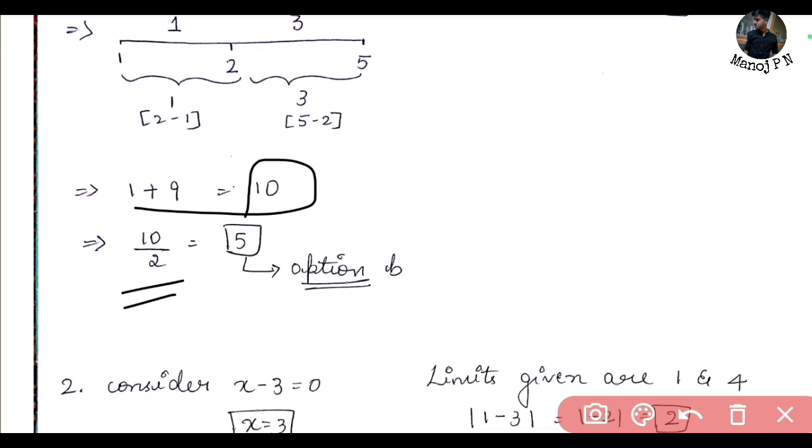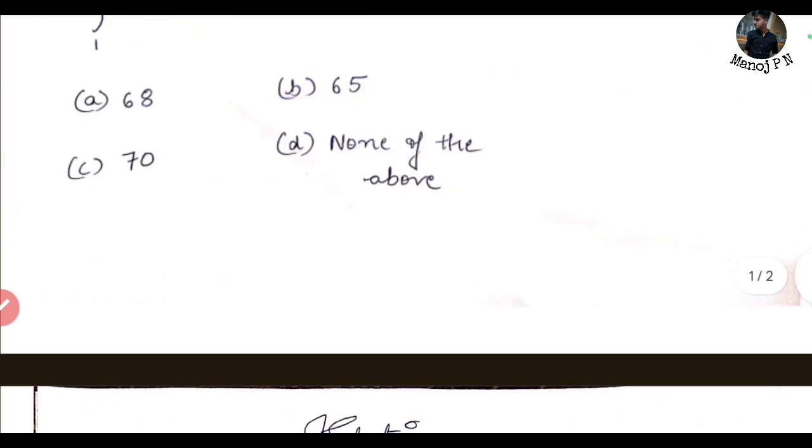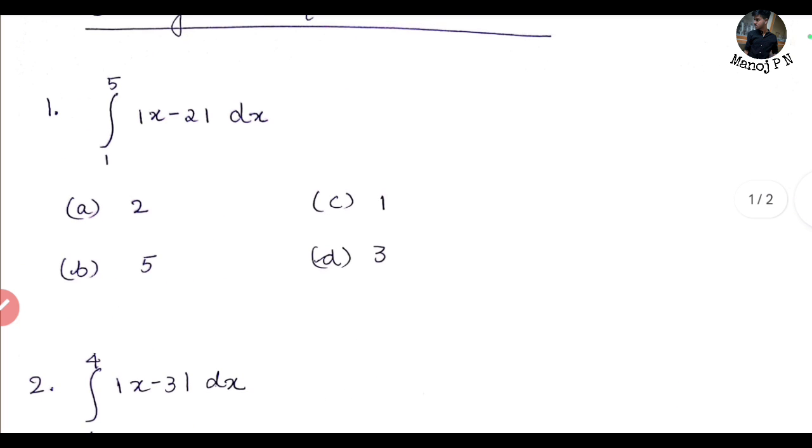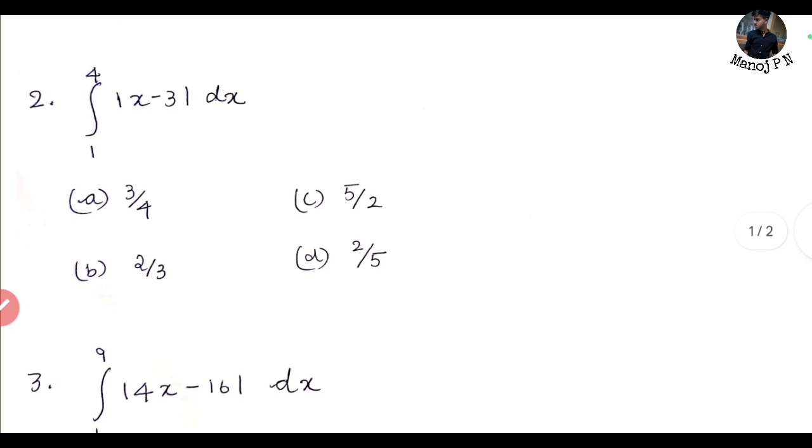Always remember guys, with summation you divide by 2. So 10 divided by 2 equals 5. Option B is the final answer. I hope this concept is clear.